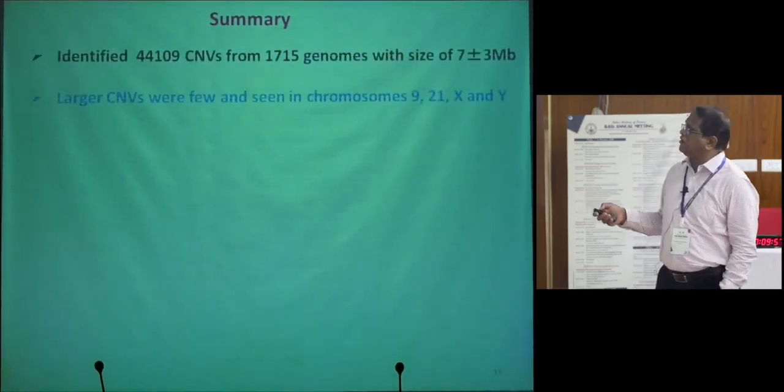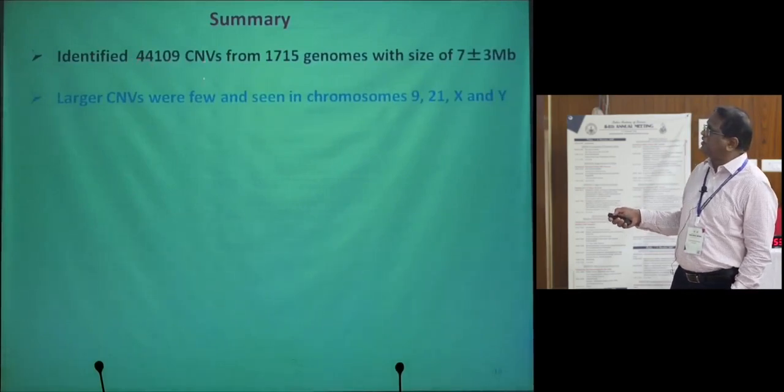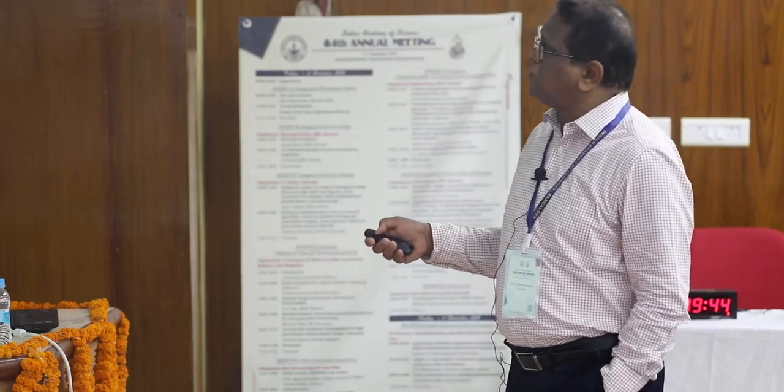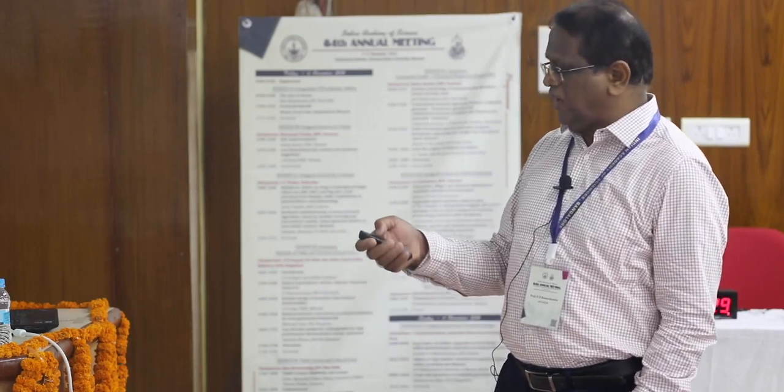To summarize, we identified 44,000 CNVs in the genomes. The average is 7 MB per genome, with larger CNVs being fewer and seen in chromosomes 9, 21, X, and Y. CNV distribution is independent of chromosome size. Population-specific CNVs are observed, and the CNV map has uncovered previously unexplored regions of the genome, bringing new insights into migration history.